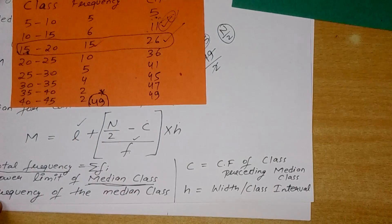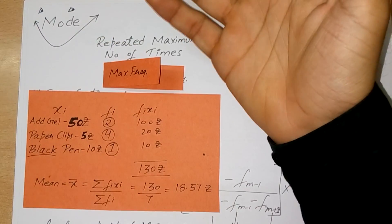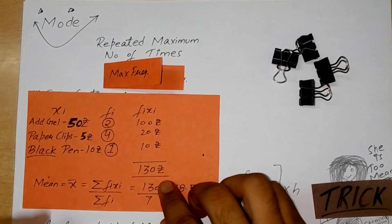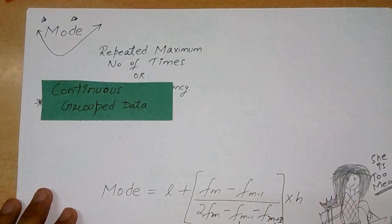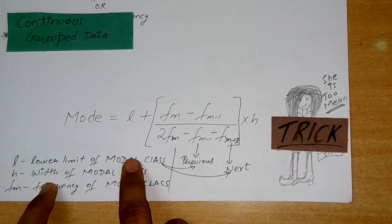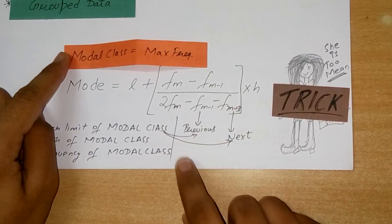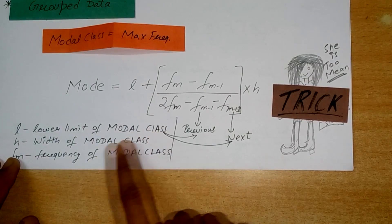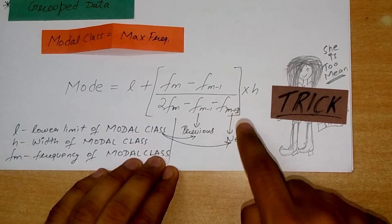Mode is the value which is repeated the maximum number of times, i.e., the value with the maximum frequency. For a continuous grouped data, we apply the mode formula. The modal class is the class which has the maximum frequency. In the formula: L is the lower limit of the modal class, h is the width of the modal class, f_m is the frequency of the modal class, f_{m-1} is the frequency of the class preceding it, and f_{m+1} is the frequency of the class following it.